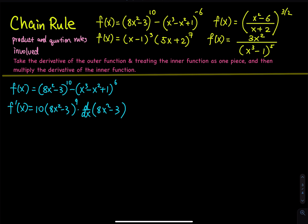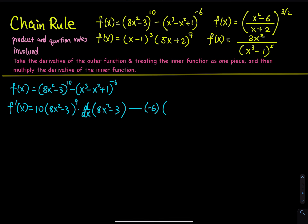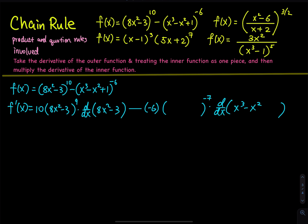And then minus — in the given problem I use a negative 6, right? So let's put the negative sign in there. We bring the negative 6 down, and then whatever that is raised to the negative 6 minus 1, which is negative 7. And then we multiply the derivative of the parenthesis using chain rule, which is x to the third minus x squared plus 1.